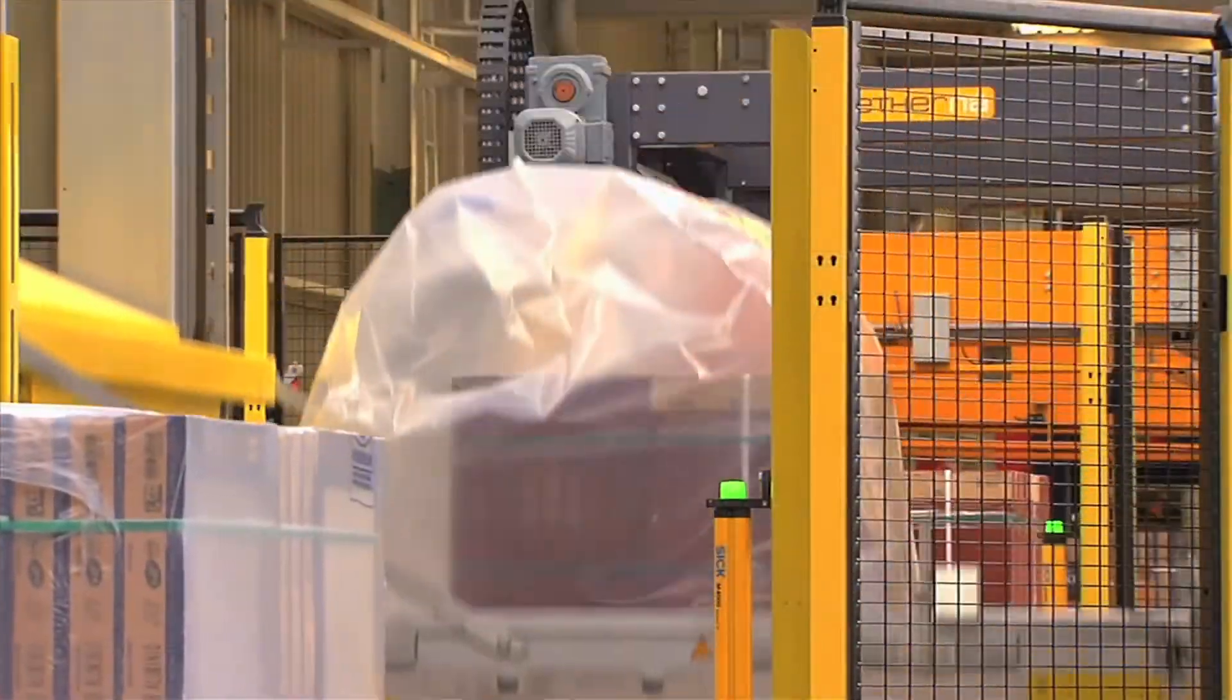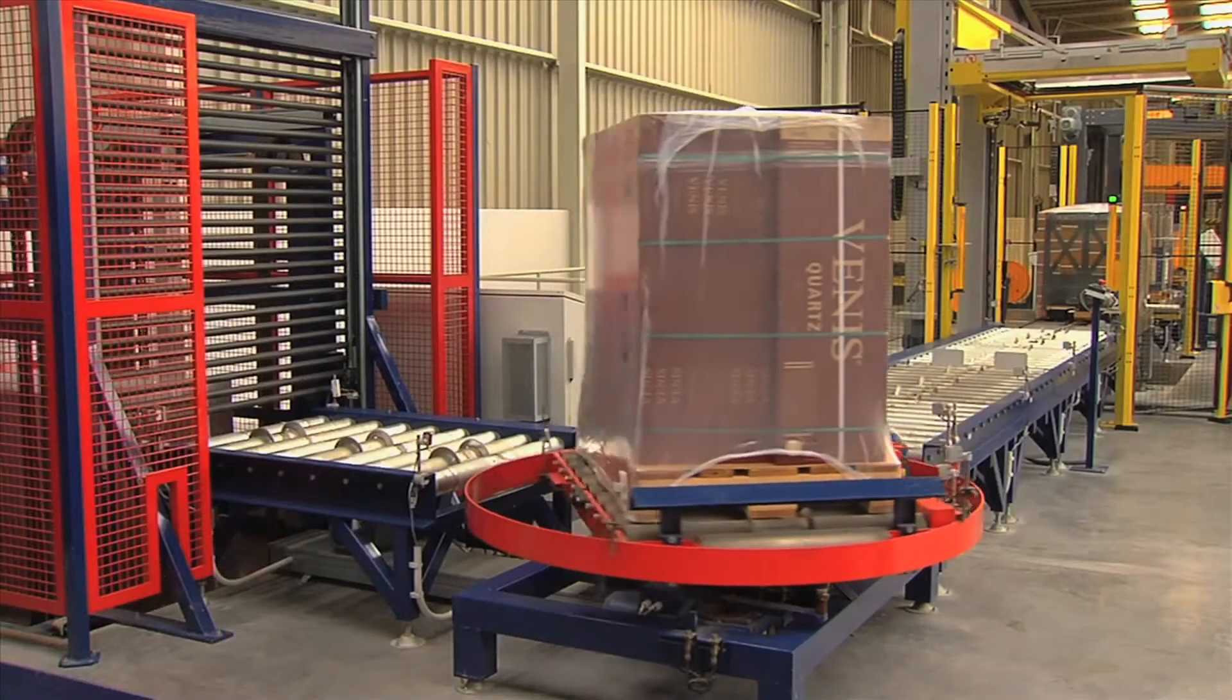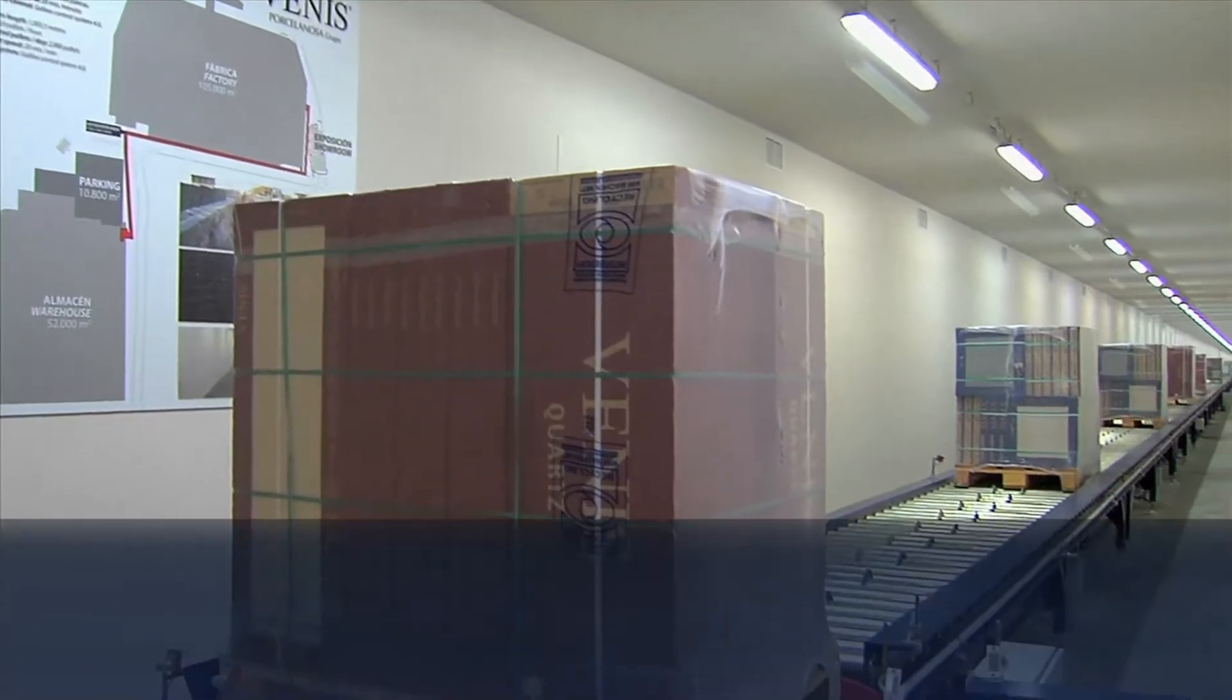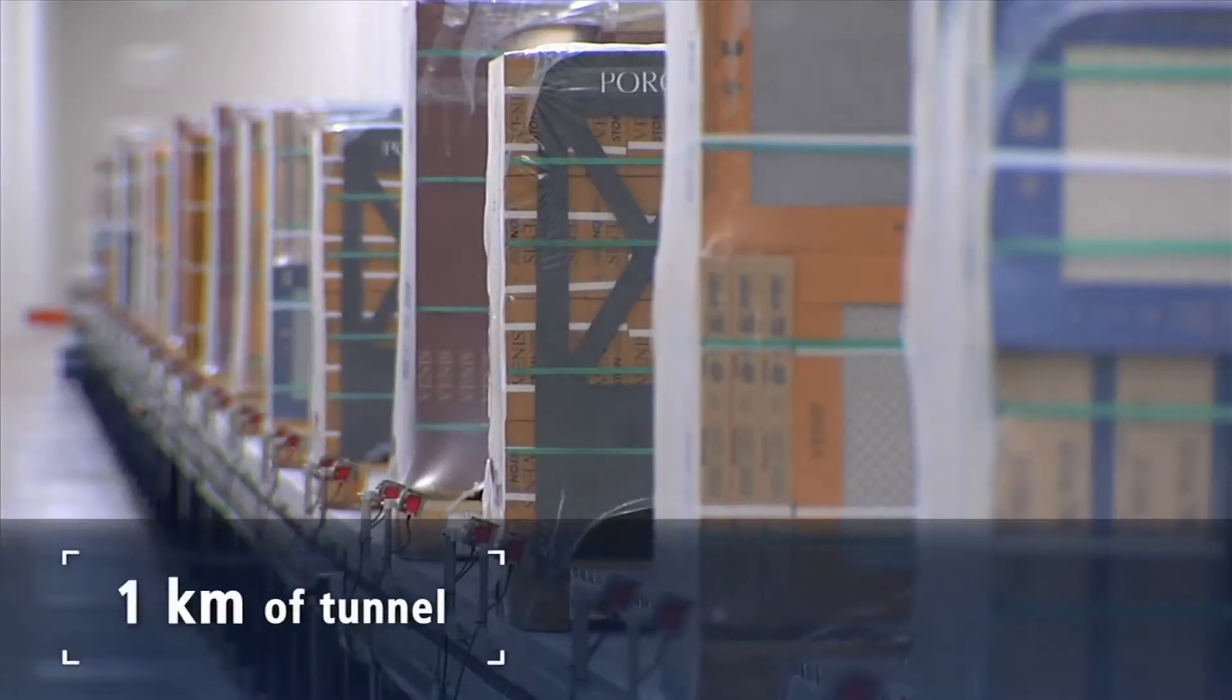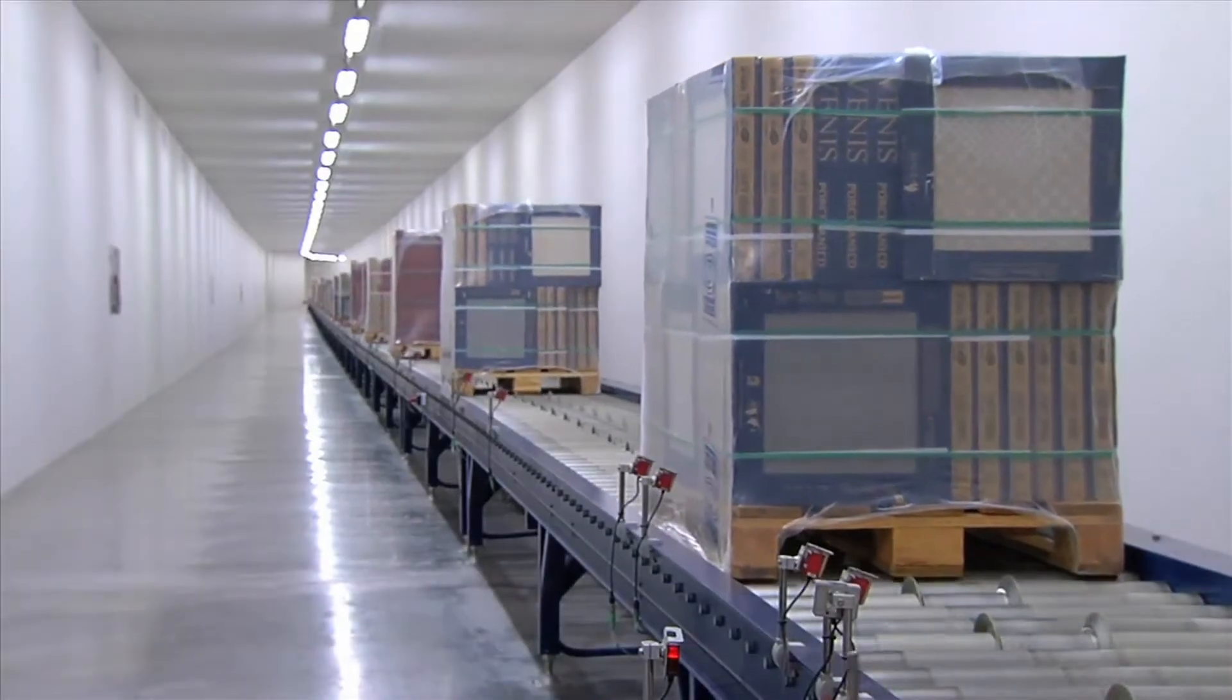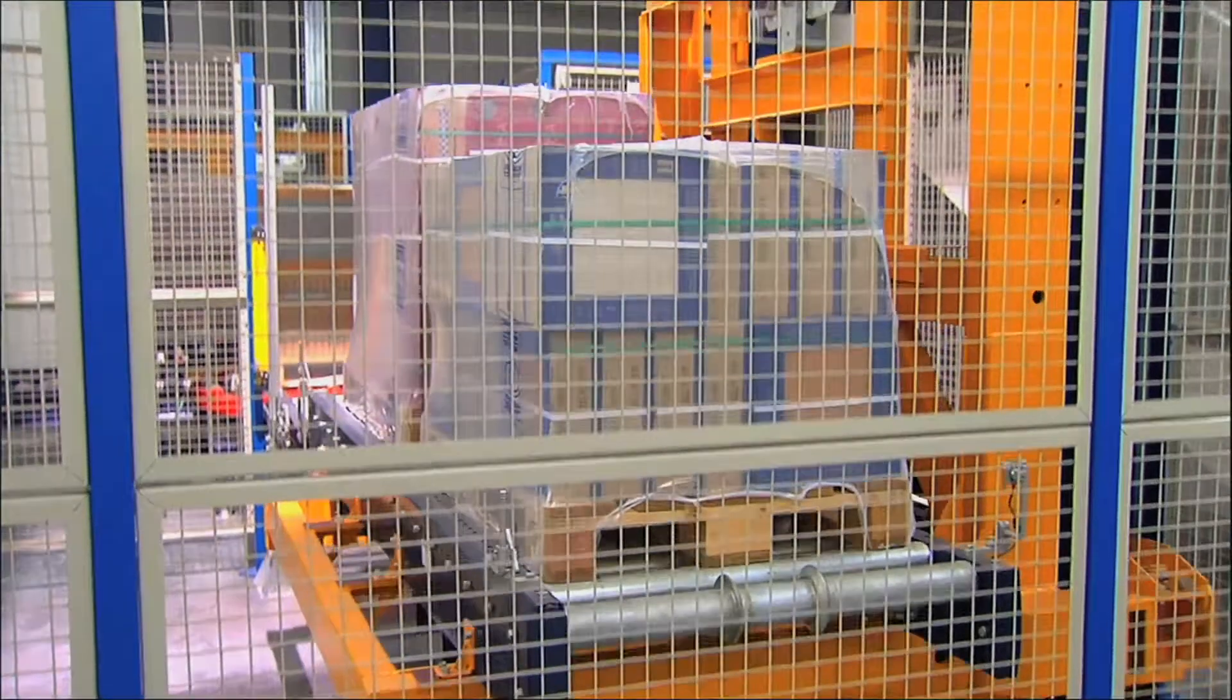The cycle starts with the pallets with the finished product. These mostly come from the production center, connected to the silo through an underground tunnel more than one kilometer long.